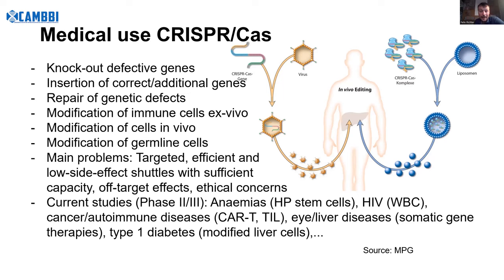The next approach is in vivo modification of cells, which is more complicated because you have to get genes into the body. Delivering a gene anywhere in the body is basically impossible today — only eyes, bone marrow, and the liver are reachable, because the liver takes up almost everything injected into the bloodstream. The ethically most debatable approach is modification of germline cells — changing the DNA of children before they are made. This already happened once in China and got a lot of backlash. It's feasible since it's easy to reach a single cell and change genes, but changing the genome of unborn children is still hotly debated.